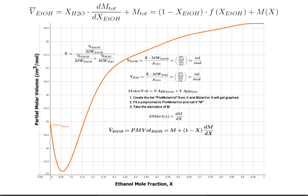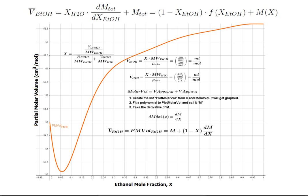The final step is to calculate V of ETOH — the partial molar volume of ethanol — and then graph it. Using the equation we derived, we get partial molar volume in cubic centimeters per mole versus ethanol mole fraction. The curve starts at about 55 cubic centimeters per mole, actually drops to nearly 53, and then rises up again to about 58.6 or so. That concludes the first method for finding partial molar volume. If you have any questions, please leave them in the comments, and when I get around to making the other method I'll post a link in the description. Thank you.